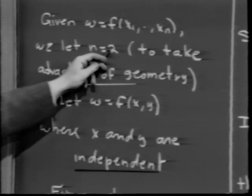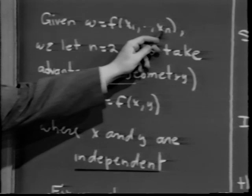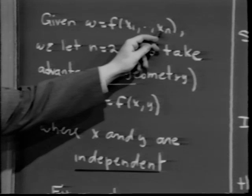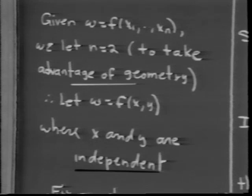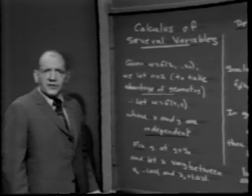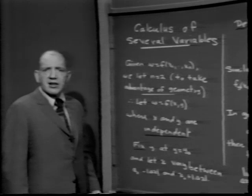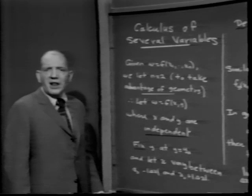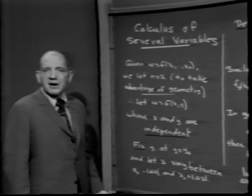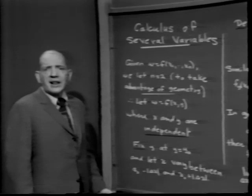We begin with the special case n equals 2. If n is 2, we need two degrees of freedom to plot the independent variables — that would be the xy plane — and a third degree of freedom, the z-axis, often called the w-axis. In the same way I can graph a real-valued function of a single real variable as a curve in the plane, I can graph a real-valued function of two real variables as a surface in three-dimensional space.